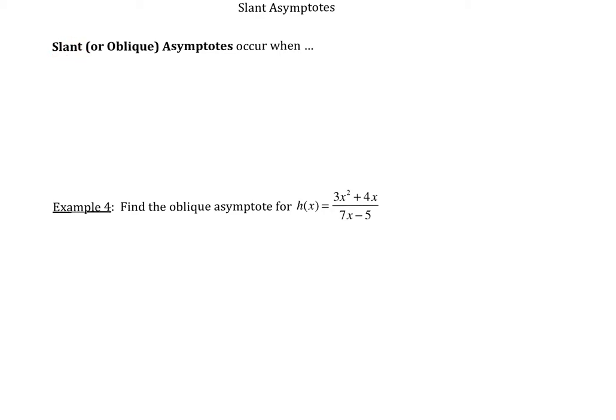Let's talk about slant or oblique asymptotes. These are just two different words for the same type of object. So these slant or oblique asymptotes,